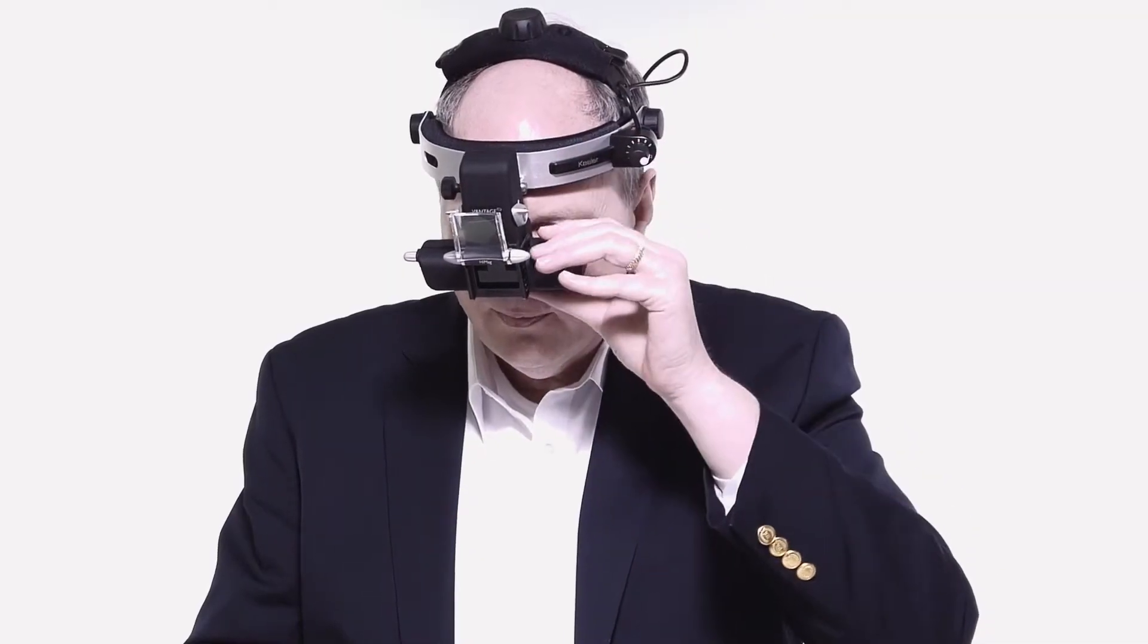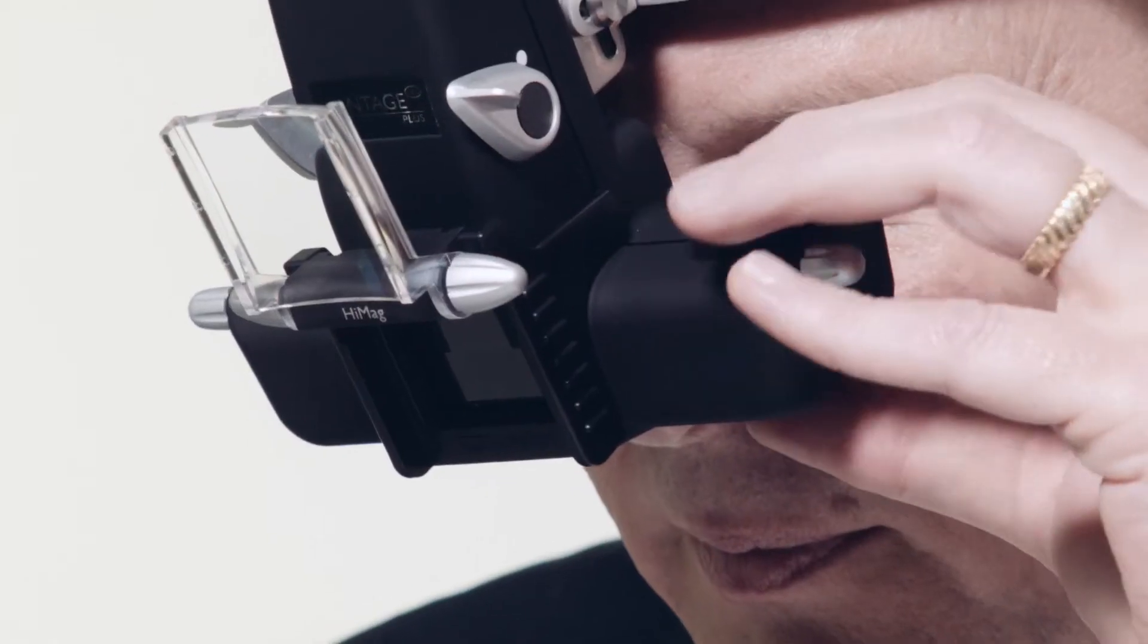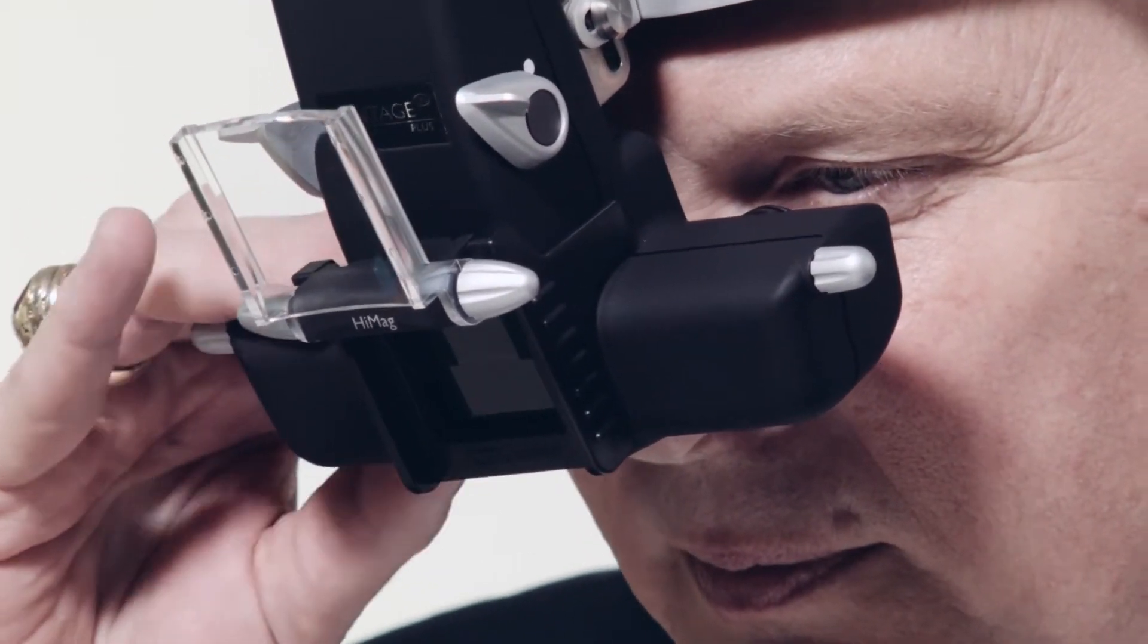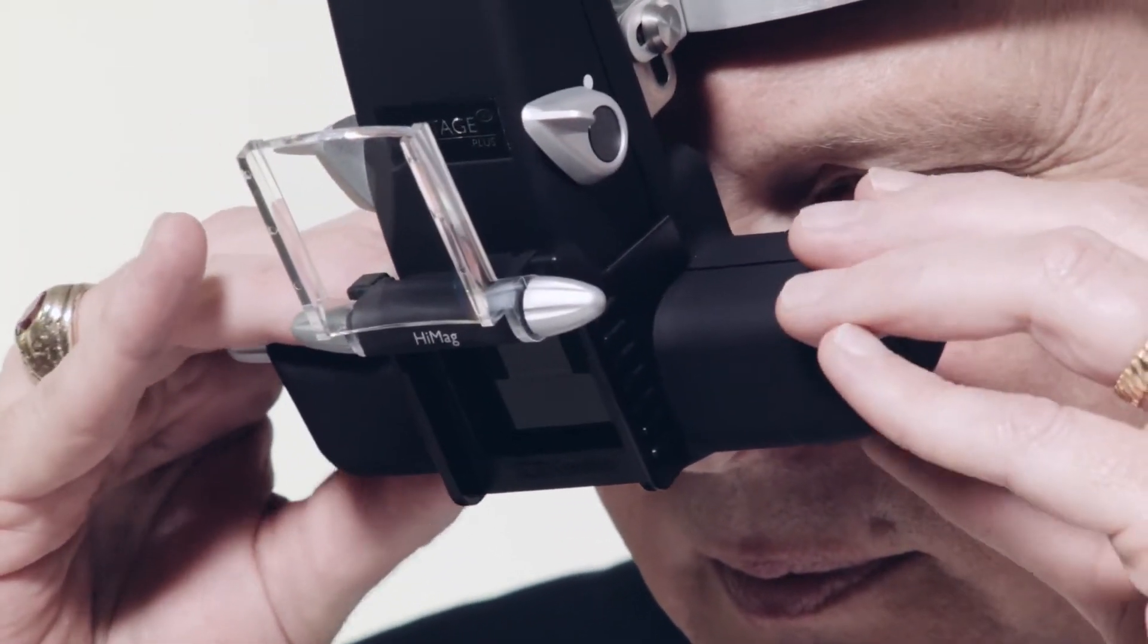Because eyes are dissociated, pupillary distance, or PD, must be set for each eye. Simply slide one ocular at a time and make sure the image is fused.